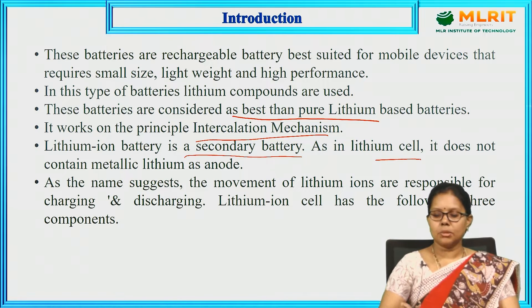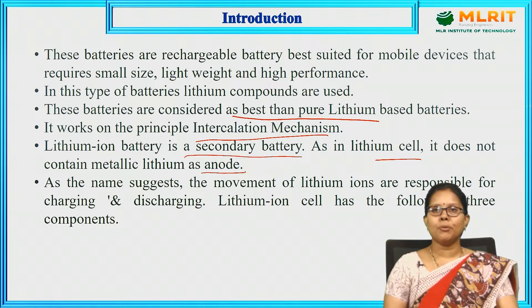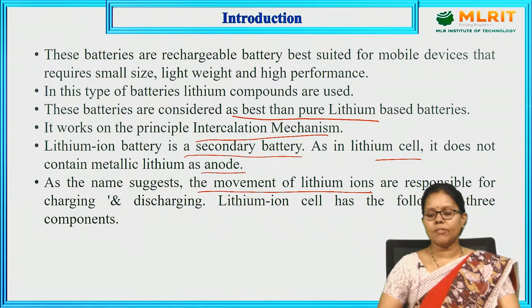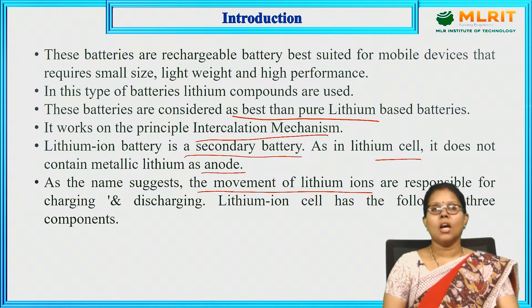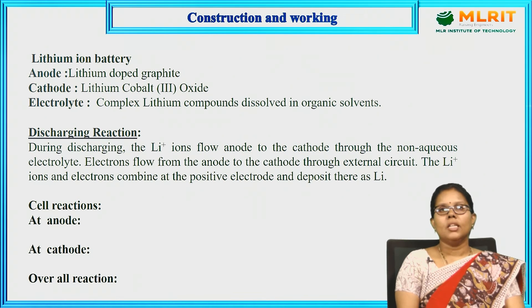Unlike in a lithium cell, this battery does not contain metallic lithium as the anode — it does not have pure lithium metal. It uses lithium-doped graphite as the anode. As the name suggests, the movement of lithium ions is responsible for charging and discharging. The mobility of lithium ions from anode to cathode and cathode to anode governs the charging and discharging. The lithium cell has three components: anode, cathode, and electrolyte.